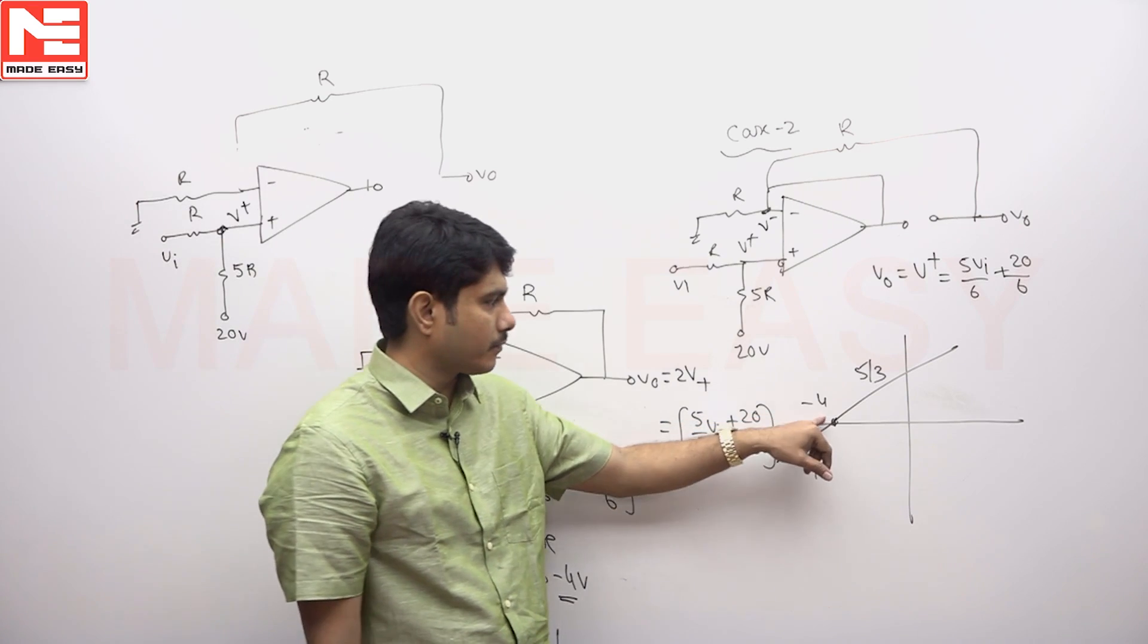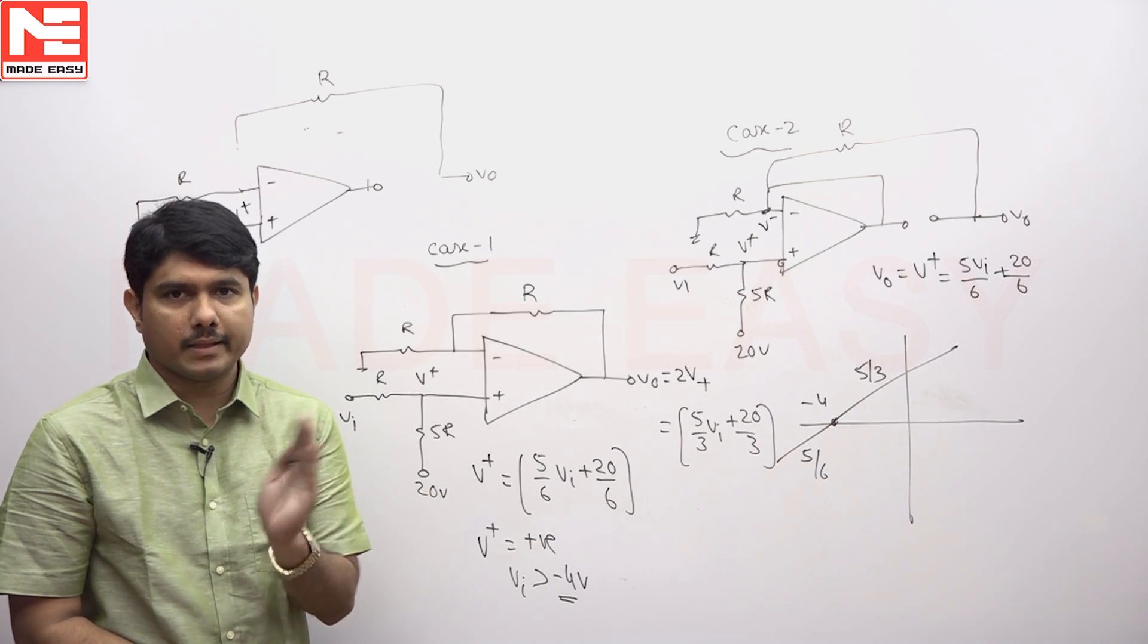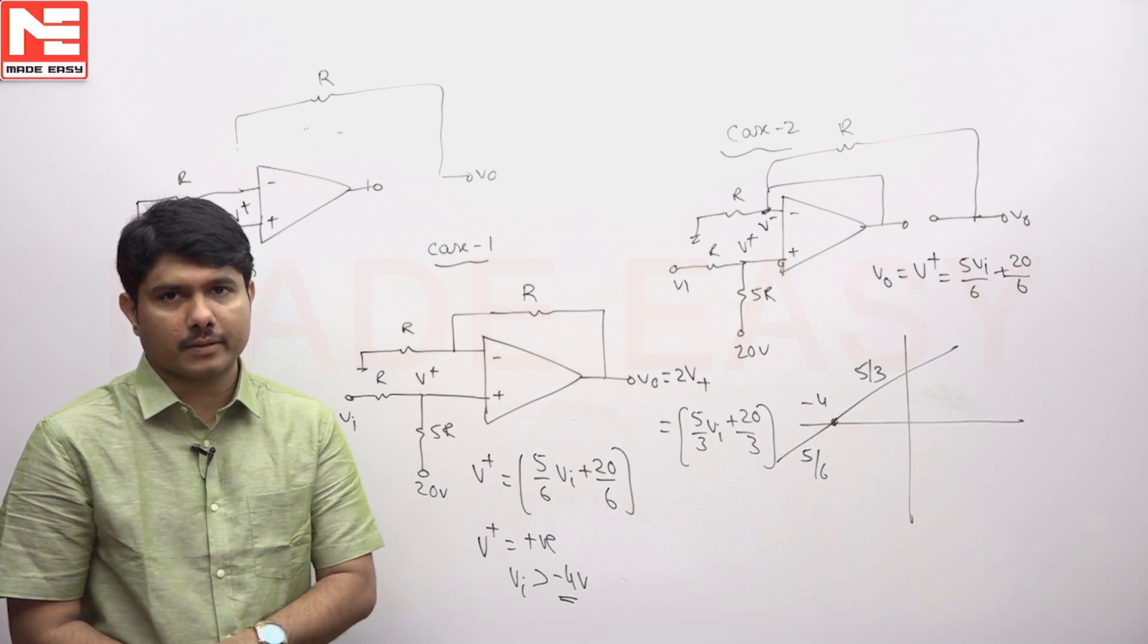So V plus is equal to positive only when VI crosses minus 4. In the graph, minus 4 is the boundary point between VI negative and VI positive.